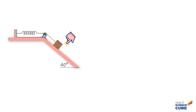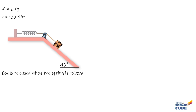What we have here is a 2kg bread box placed on a frictionless incline of 40 degrees, connected by a cord to a spring that has a K value of 120 N per meter. The box is released from rest when the spring is unstretched or in relaxed position. The first question is: what is the speed of the box when it has moved 10 cm down the incline?